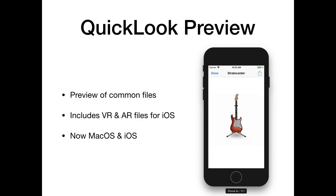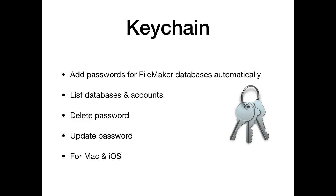We got Quick Look functions for Mac and iOS, which can be handy to show a preview of various file formats, including 3D or augmented reality files — you can show the panel and walk around a 3D guitar on screen. We also got Keychain functions for Mac and iOS. The Keychain is a central database for storing passwords. You can pre-fill passwords for your FileMaker databases, list which accounts have a password in the Keychain, and delete or update passwords. In a perfect world, when starting the first file you put all the passwords for other files into the Keychain so the user isn't asked for passwords again.